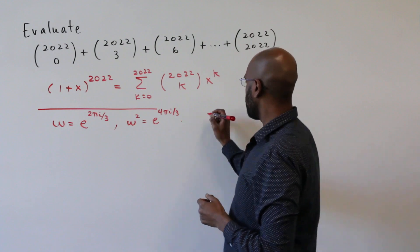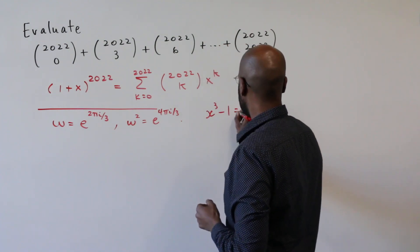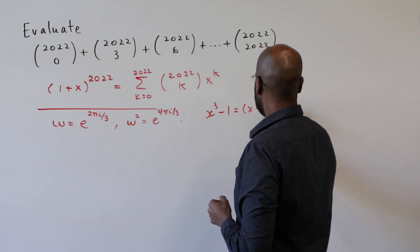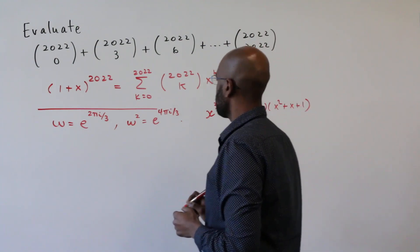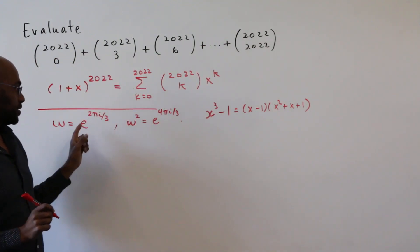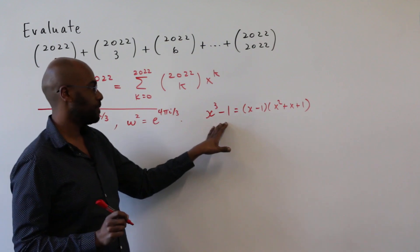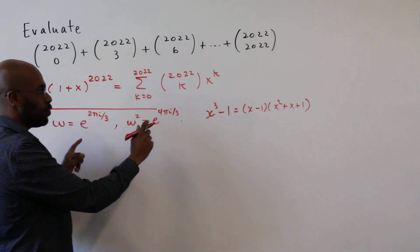This factors into x minus one times x squared plus x plus one. And so these two things are roots of that because their cubes are one. However, neither of these are actually the value one.